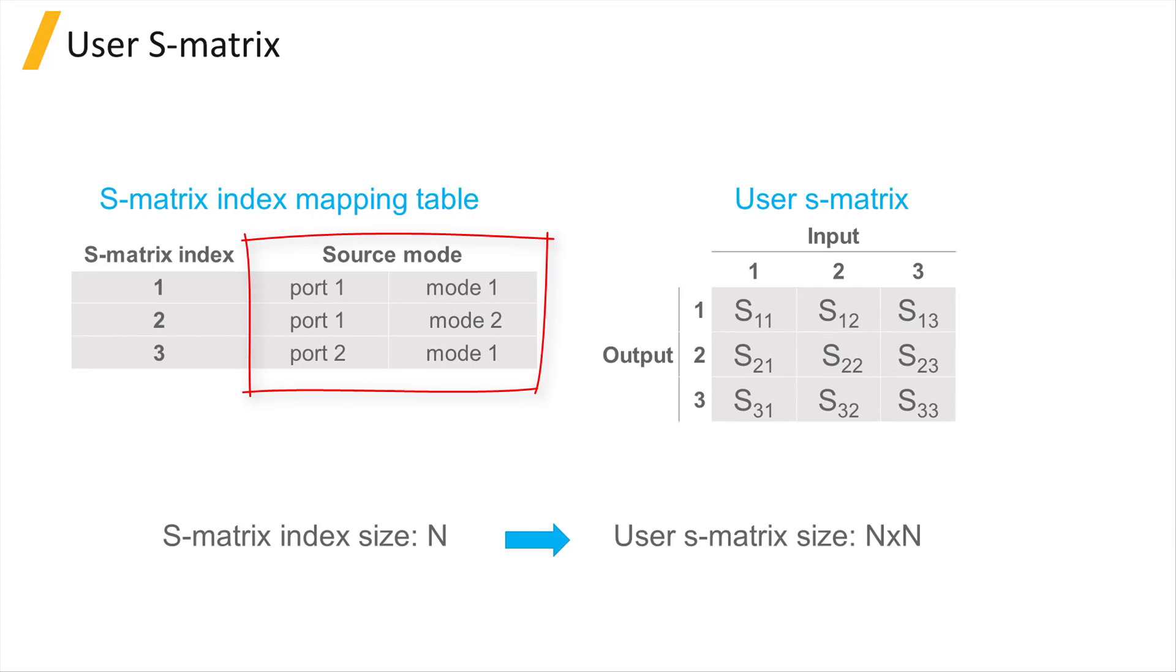When you have two modes selected at port 1 and a single mode for port 2, then you have three unique S-Matrix mapping indices. The resulting user S-Matrix in this case will be 3 by 3 in size.